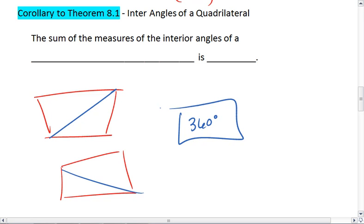This is what the corollary tells us. The interior angles of a quadrilateral, the sum of the measure of the interior angles of a quadrilateral, is 360 degrees.